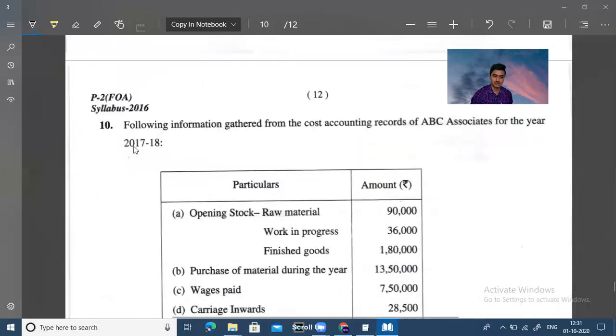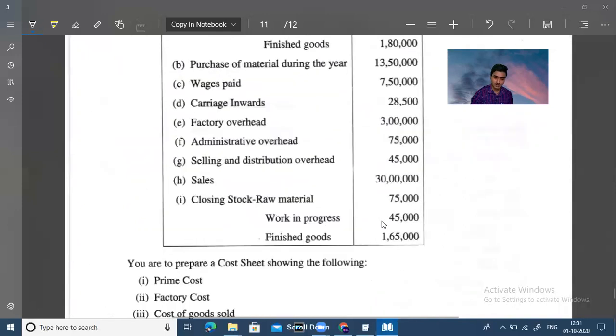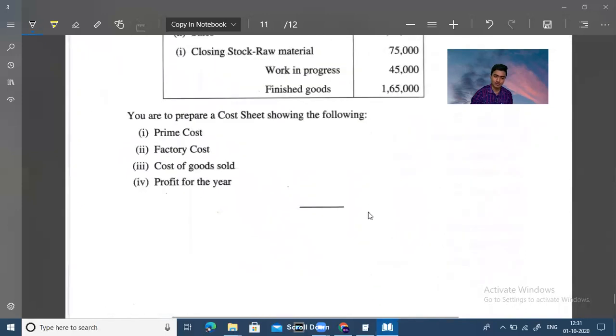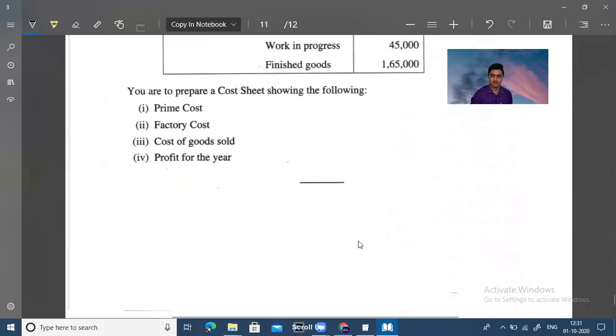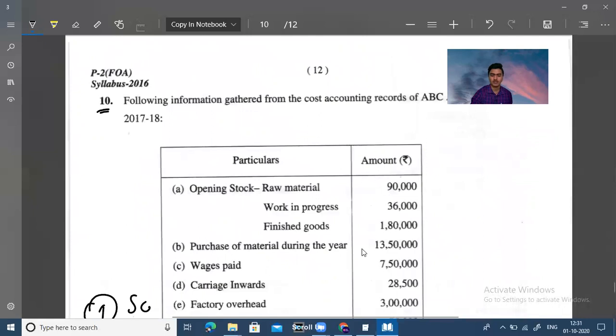Next question, question number 10. What is the following information gathered from the cost accounts record of ABC? The question is the same as I have done in the first chapter of the scanner. Same question here, so you can see it very easily.